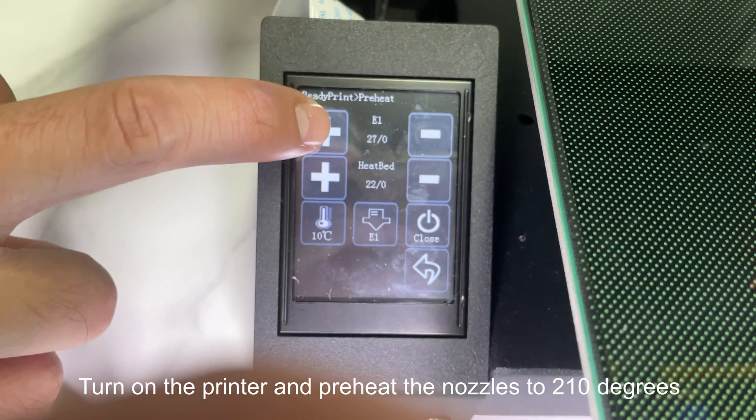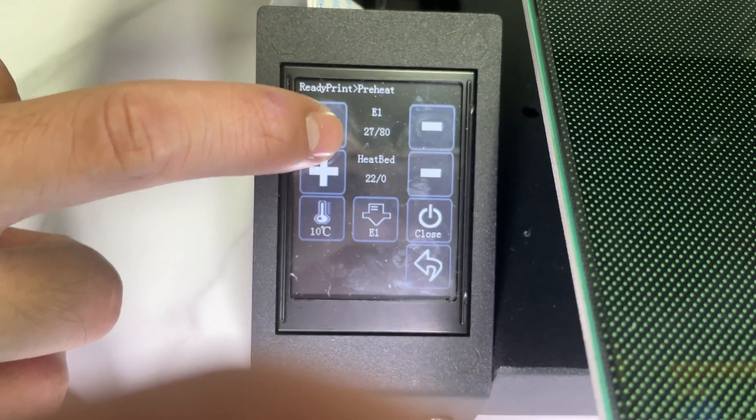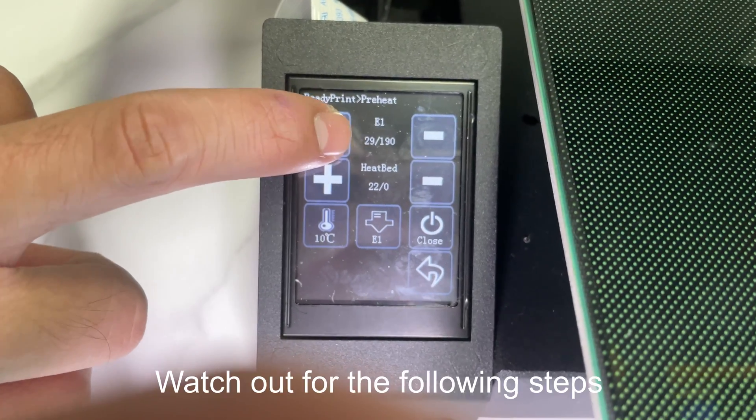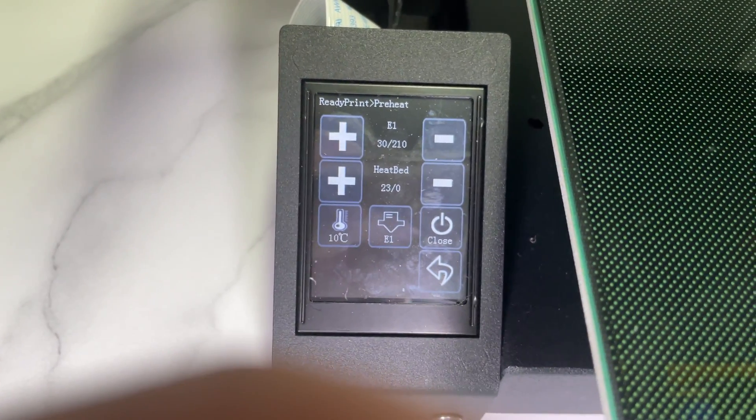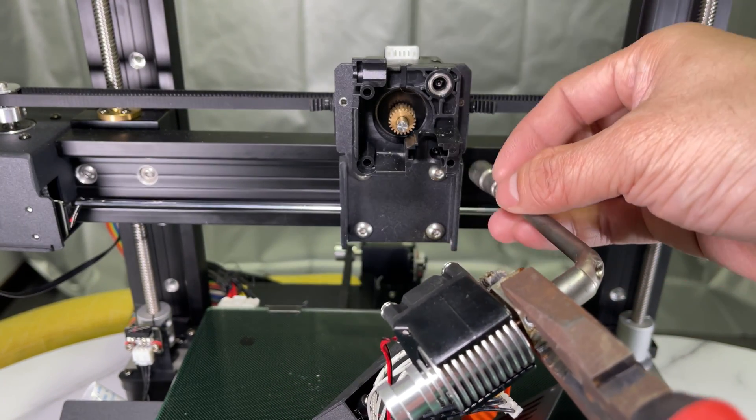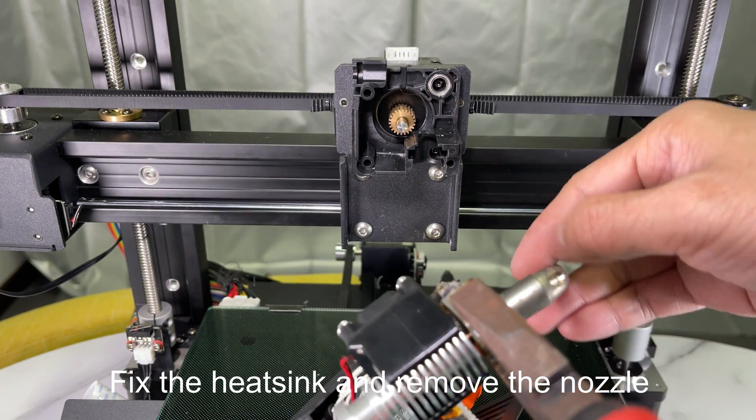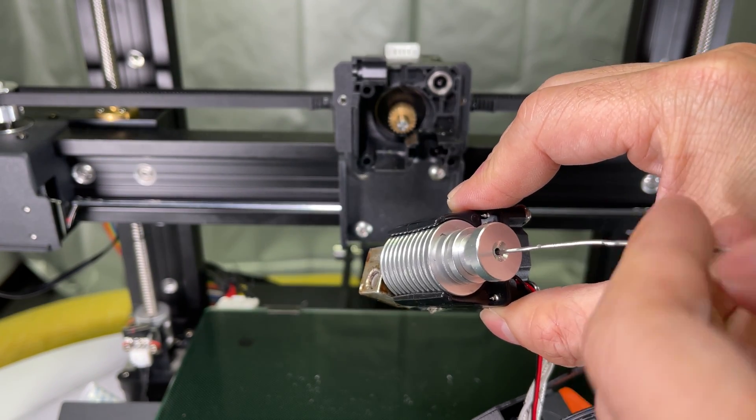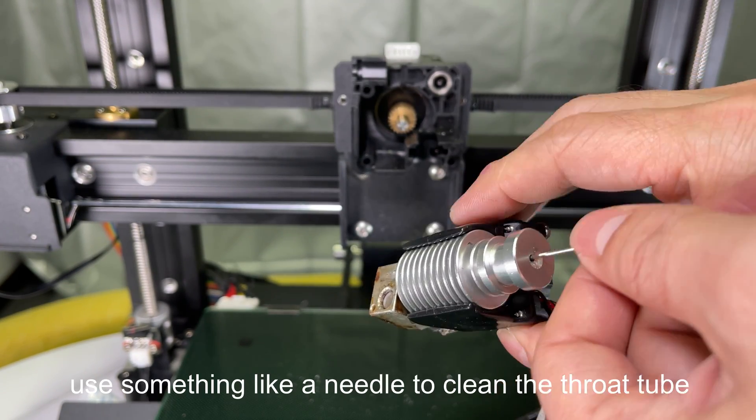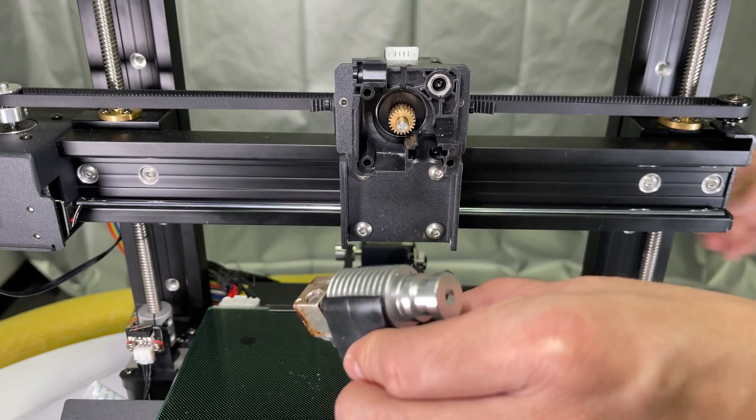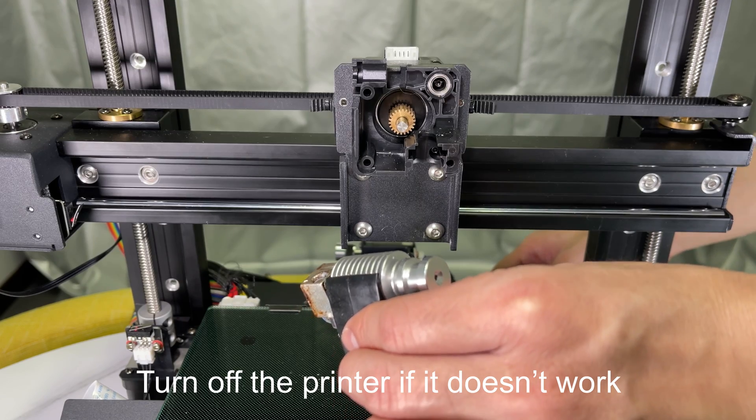Turn on the printer and preheat the nozzles to 210 degrees. Watch out for the following steps. Fix the heatsink and remove the nozzle. Use something like a needle to clean the throat tube. Turn off the printer if it doesn't work.